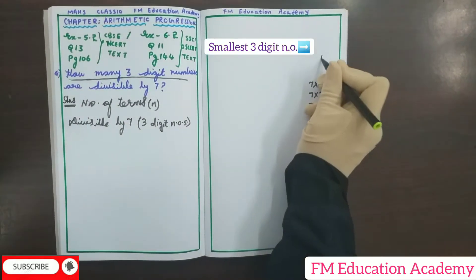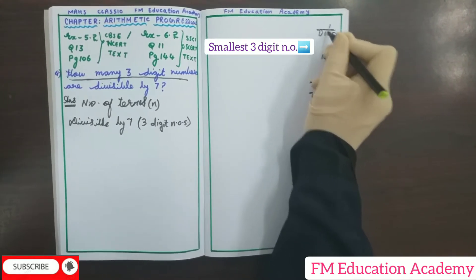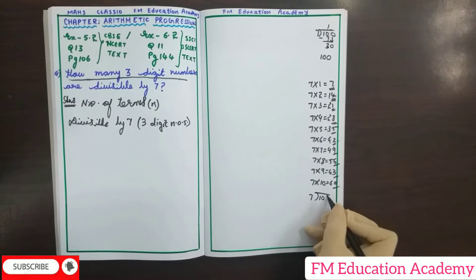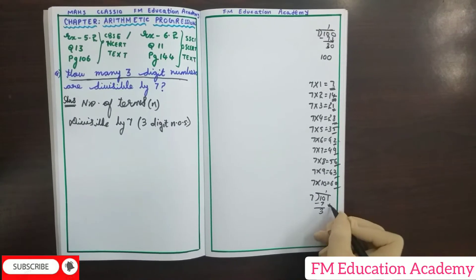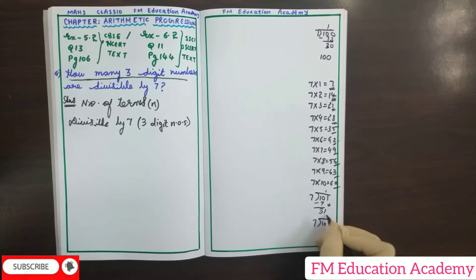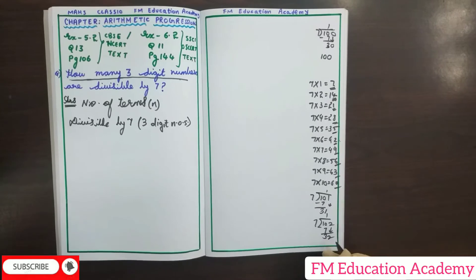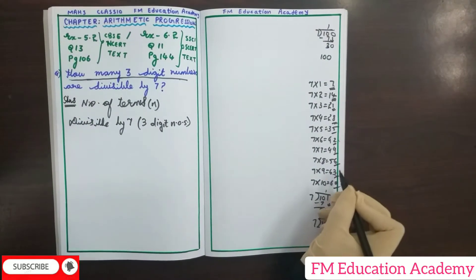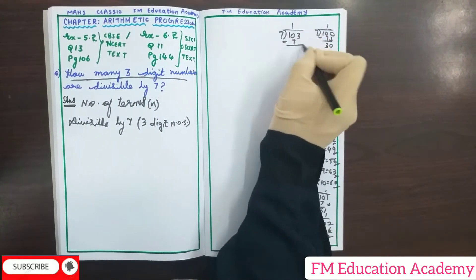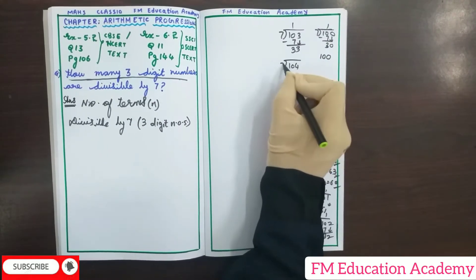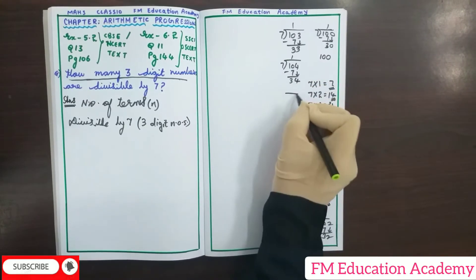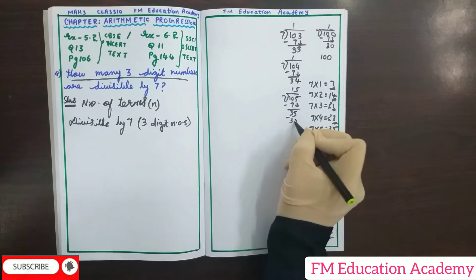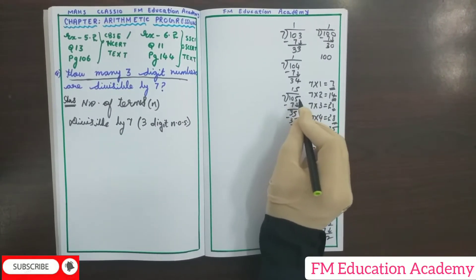The smallest three-digit number is 100, but 100 is not divisible by 7. Checking 101, 102, 103, 104 — none of these are divisible by 7. Checking 105: 7 ones are 7, 10 minus 7 is 3, giving 35. We know 7 fives are 35, so the remainder is 0. Therefore, the smallest three-digit number divisible by 7 is 105.